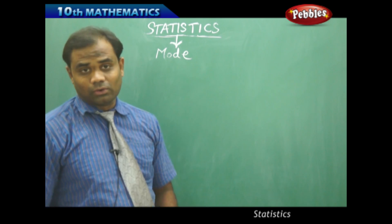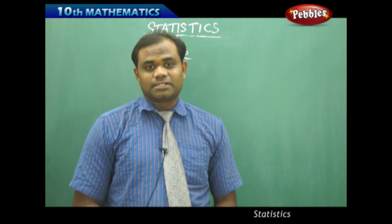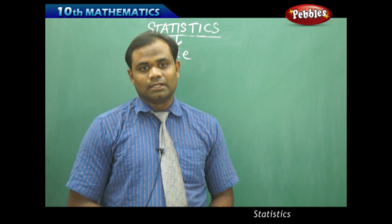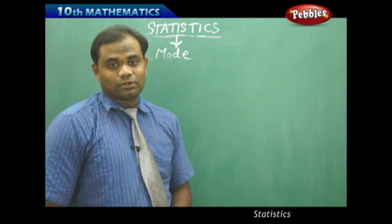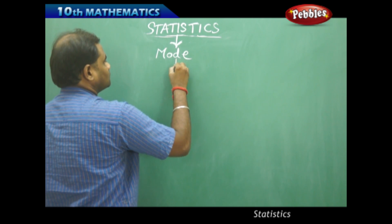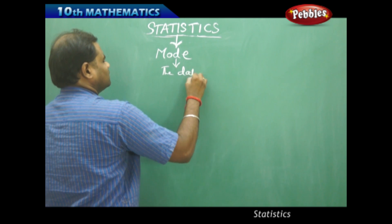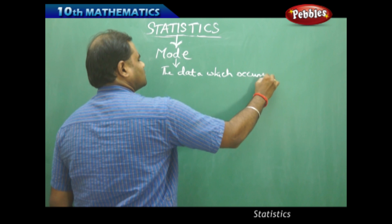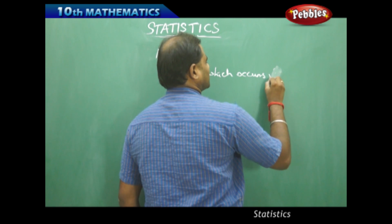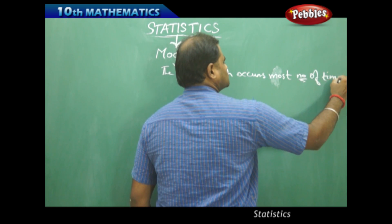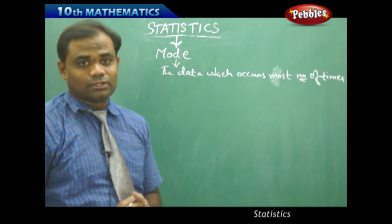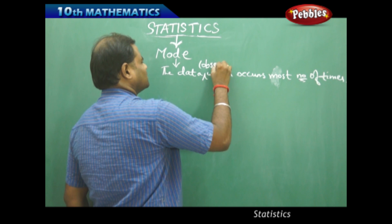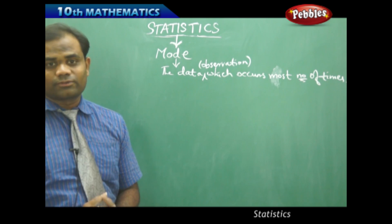The next measures of central tendency identified in statistics are mode, mean, and median. Let's start with mode. Mean is the average of the data, and the basic definition of the second measure of central tendency, mode, is: the observation which occurs most number of times, or most frequently, is called the mode.